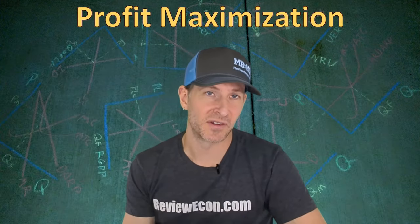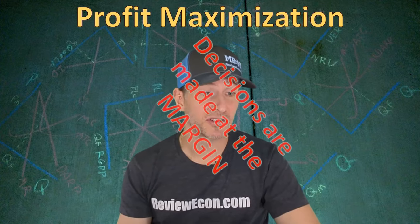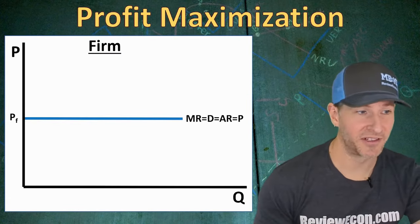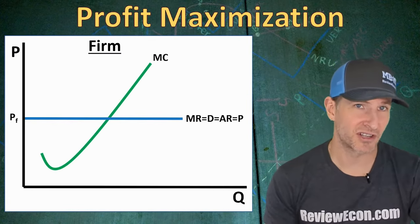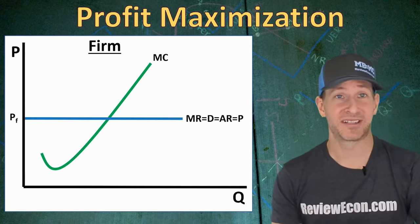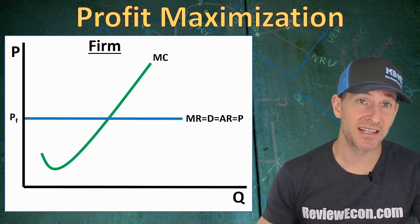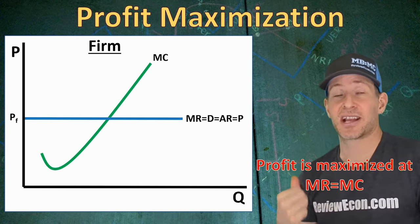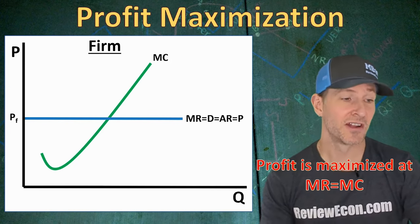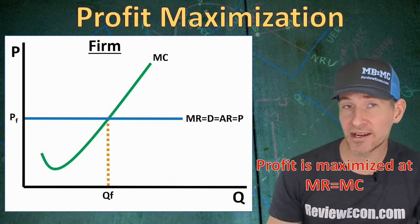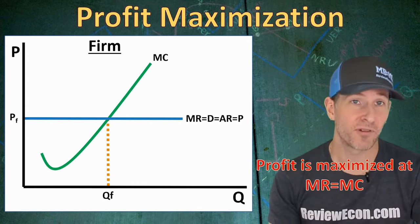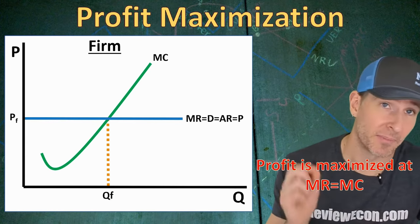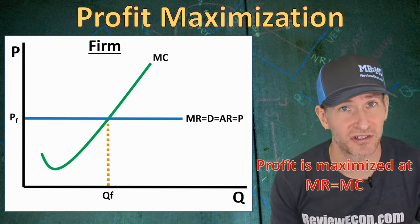While you can see the total revenue and total cost graph on your exam, remember that most decisions are made at the margin. So we look at the marginal revenue graph and add a marginal cost curve. Profit is maximized where marginal revenue equals marginal cost. Find the intersection between the MR curve and MC curve, drop down, and that is the profit-maximizing quantity of output. This is true for every profit-maximizing firm: they profit maximize where marginal revenue equals marginal cost.